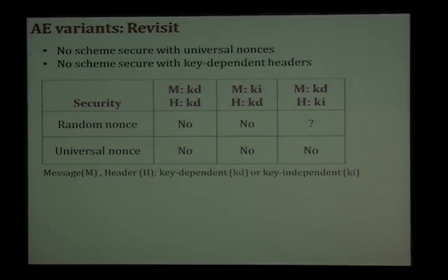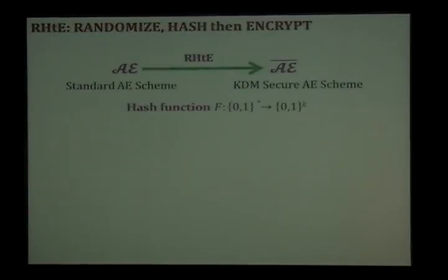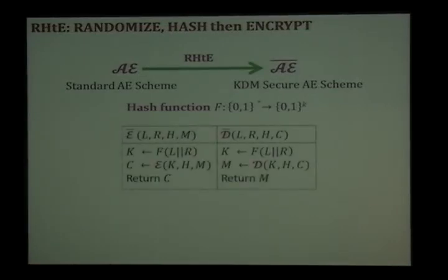This is rather sad. The only variant where we can still hope to get secure schemes is with random nonces, key-independent headers, and key-dependent messages. And we show that this can be achieved by our scheme Randomize, Hash, and Encrypt. Our scheme is actually a transform: it takes an existing authenticated encryption scheme and converts it into one that is secure in this setting. Internally it uses a hash function.